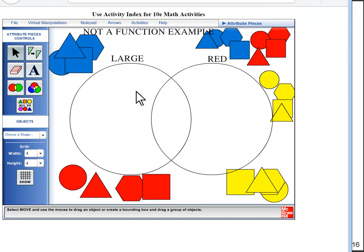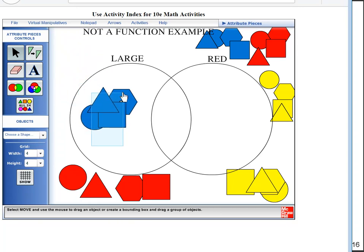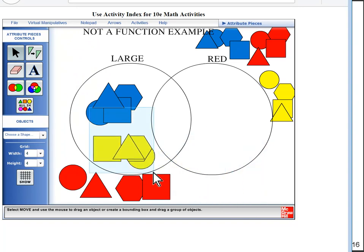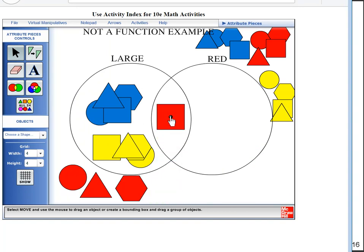You see here that I've defined large and red. So if my sorting rule is, is the piece large or red, then these large blue pieces would go here, these large yellow pieces would go here, and everything seems okay. But when I pick this large red square, it goes into the large set, it goes into the red group, and therefore it's in both circles.